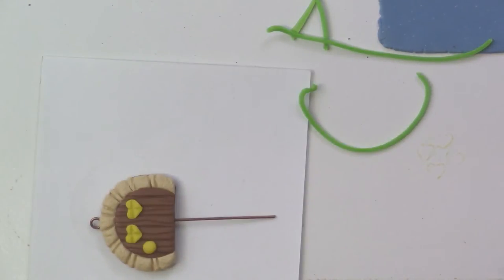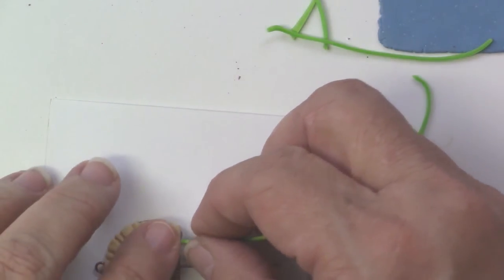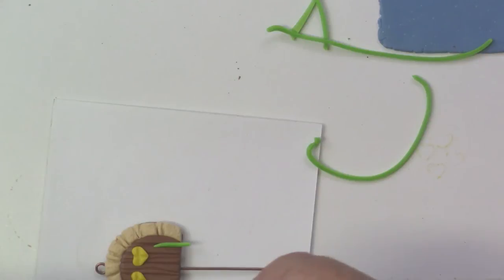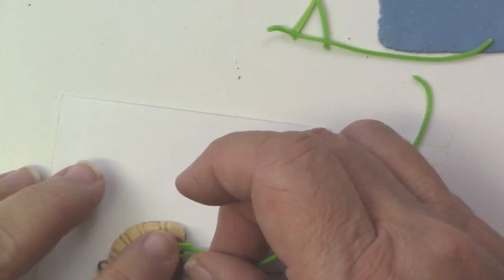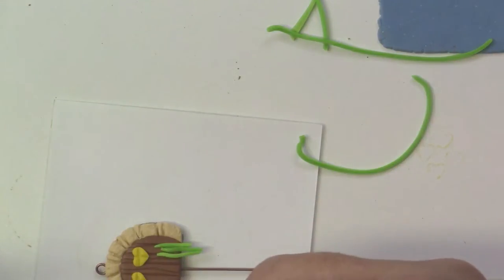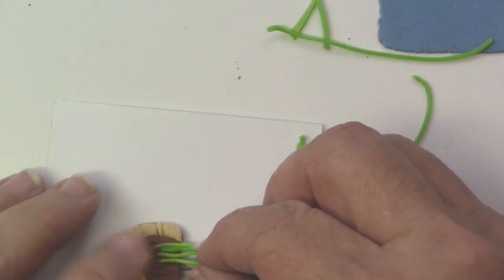I'll take that green clay and roll a thin snake. I'm going to start creating a little bit of grass and stalks for some flowers that are going to be in the garden in front of the door.